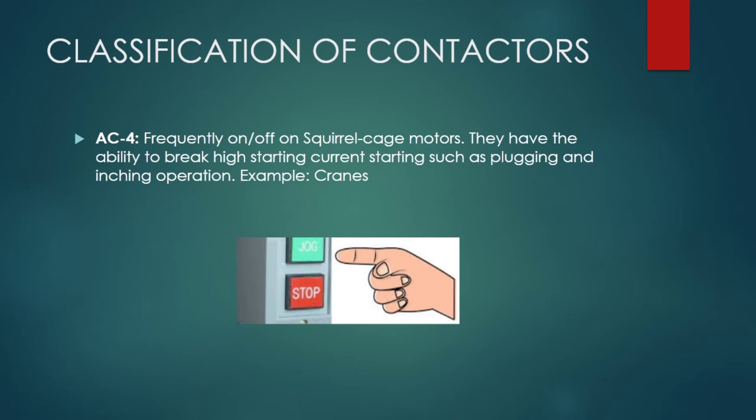The AC4 contactor is widely used where the squirrel cage motor is frequently switched on and off, or very fast switching is performed by the operator. The main feature of the AC4 contactor is its ability to break high starting current, such as in plugging and inching operations. They are widely used in the operation of heavy duty cranes.